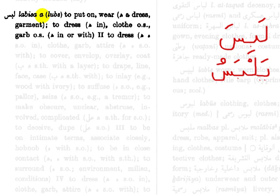Now what does labisa mean? It says here: to put on, to wear — to put on or wear a dress or garment. This tells us that this verb is actually transitive. So you can say for example: labisa Muhammadun thawbahu — Muhammad put on his garment — so the garment is the object. In the Hans Wehr dictionary, the letter ha here indicates that this is the object. So the dress or garment is the object, and the person putting on the dress is the subject — the fa'il.